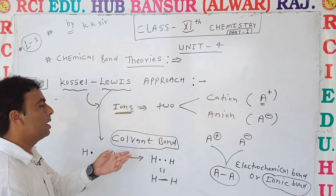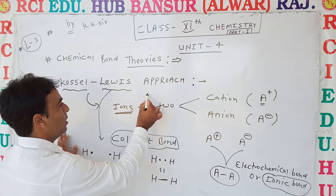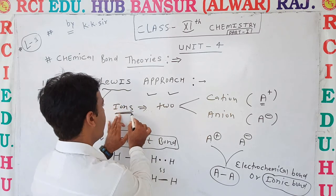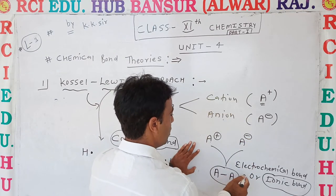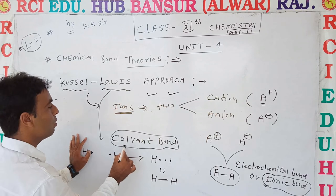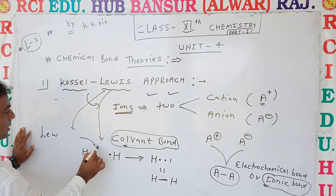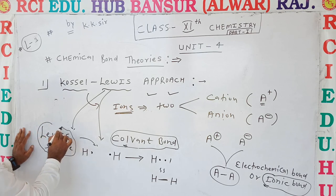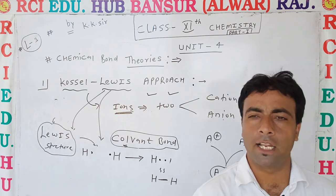So the Kossel-Lewis approach mostly explains valence electrons, the octet rule, the formation of cations and anions (positive and negative), and the formation of ionic bonds and covalent bonds. Lewis also gave structures called Lewis structures. About Lewis structures, we will see in the next class. Thank you.